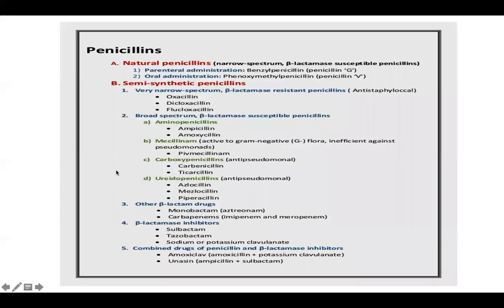Classification of penicillins: we have natural penicillins and semi-synthetic penicillins. Natural penicillins are narrow-spectrum, beta-lactamase-susceptible. For parenteral administration, we give benzyl penicillin — that is penicillin G. For oral administration, we give phenoxymethyl penicillin — that is penicillin V. Remember: penicillin G is parenteral, penicillin V is oral.